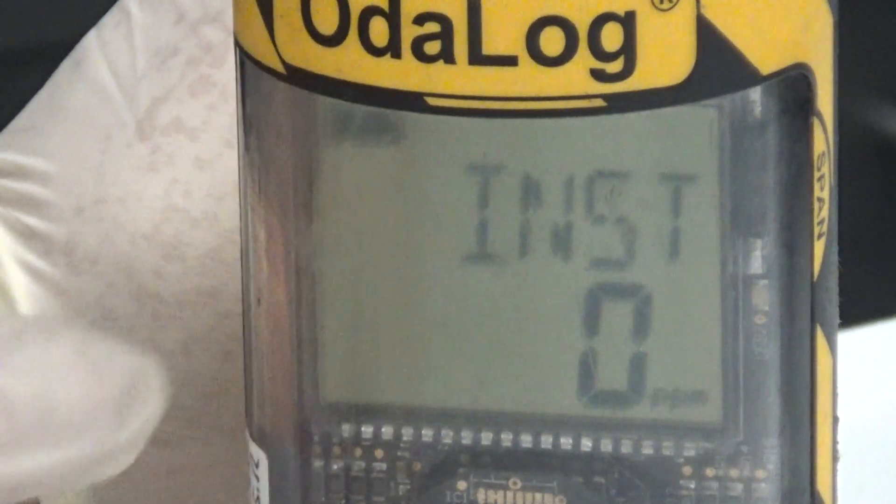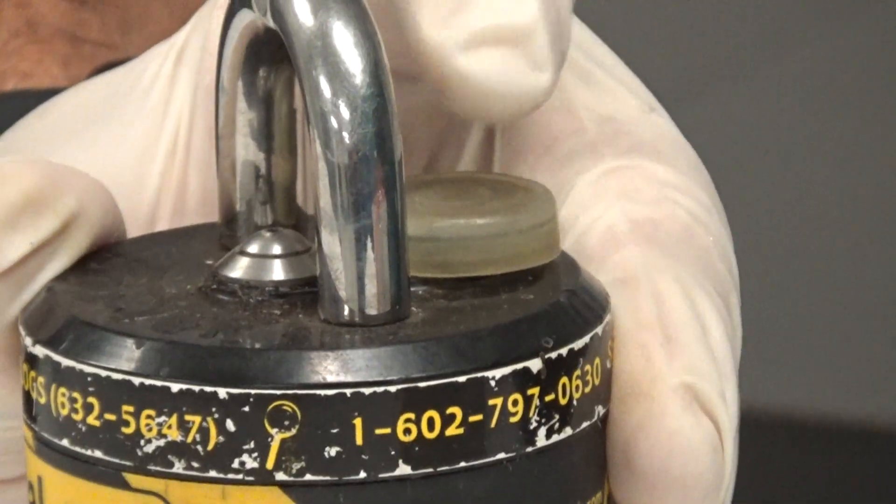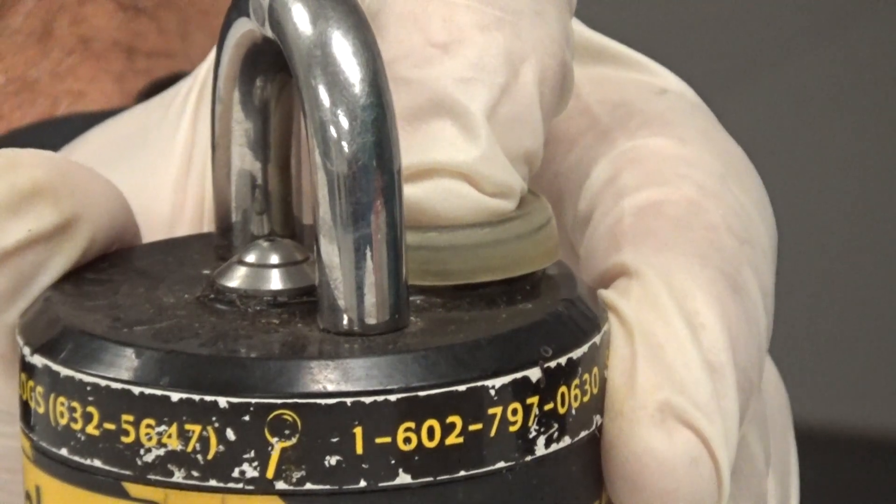At that point, to turn the unit on and start logging, you're going to hold this button down. It'll say start log.